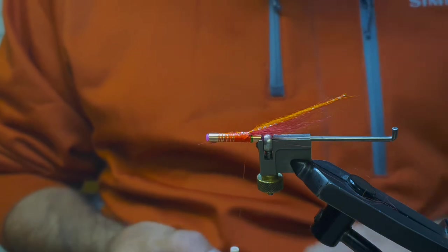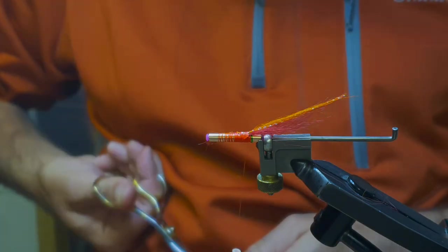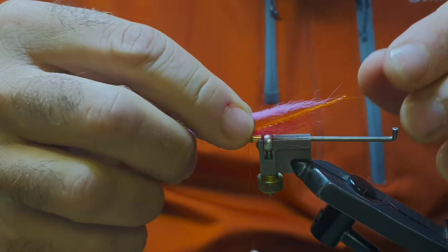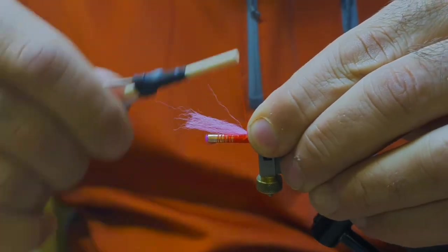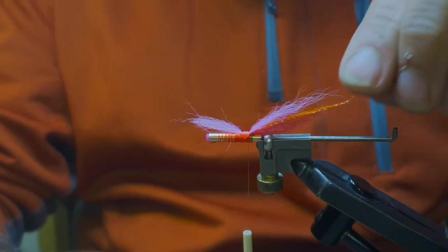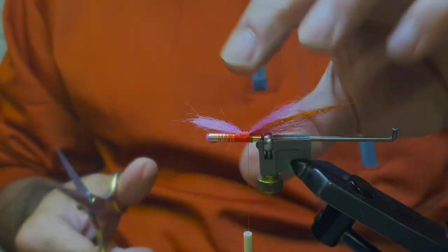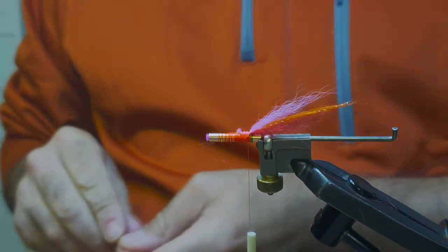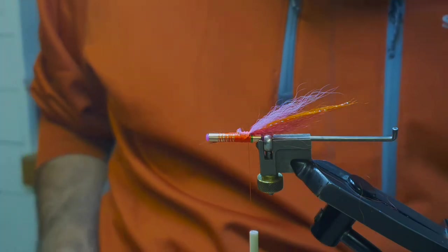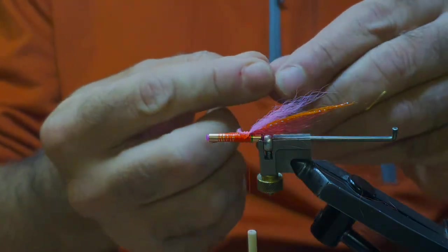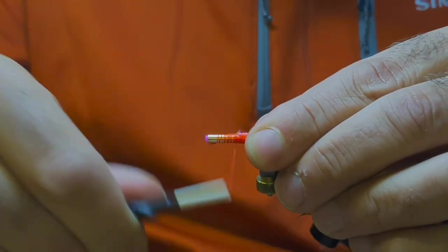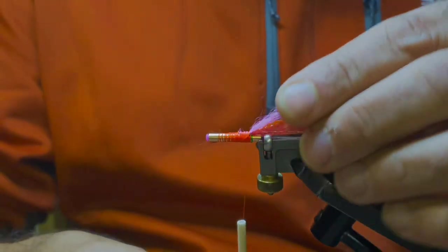And I'll come in again with the pink, and again keep that short, same length as the red. There we go, that's looking good. That's the tail finished. So now move on to the rib. Tie that in and secure back up to the tail.